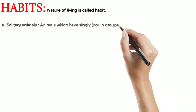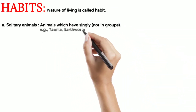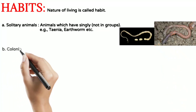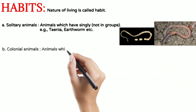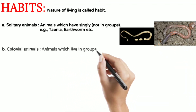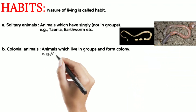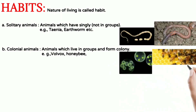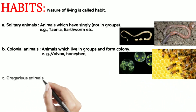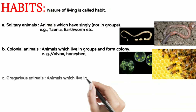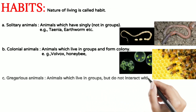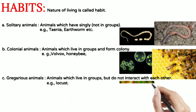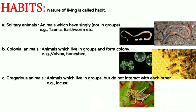Habit refers to the nature or style of living of an animal. Solitary animals live alone — like tapeworm and earthworm. Colonial animals live in a colony — like wasps, ants, and honey bees. Gregarious animals live in groups but do not interact closely — like locusts, which are gregarious pests.